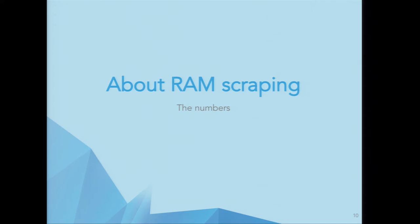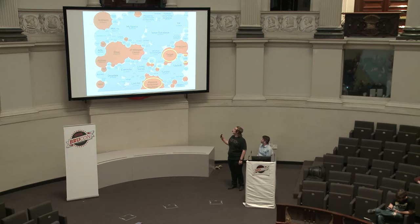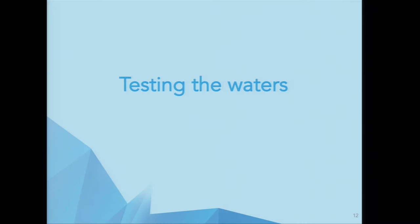To demonstrate that this is a giant problem, here's an interesting graph. From all these huge data breaches — Target at 70 million records — these are all the result of memory scraping attacks. You can see recent attacks too: Wendy's, UPS, Target, Staples, Neiman Marcus — a massive series of American business hacks. This clearly indicates that RAM scraping is a problem in the current landscape of computer science.